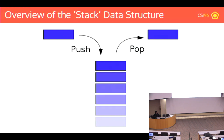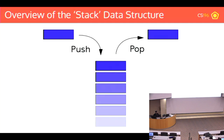Before we dive into the memory model, let's cover the stack data structure. Think of it like a literal stack — a stack of papers. Things stack up on top. The stack is useful for pushing and popping in a stack fashion. If you add an element, it goes to the top — that's called pushing. Removing something is called popping from the top. Importantly, stacks are first-in, last-out: the first thing that goes in will be the last thing that comes out, because you must remove everything on top of it first.